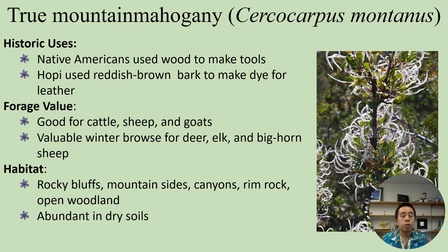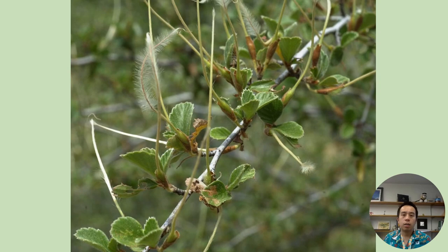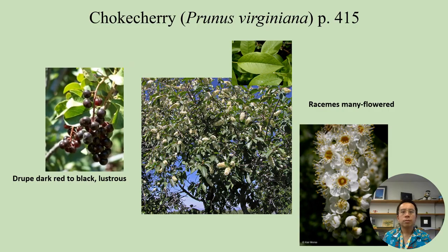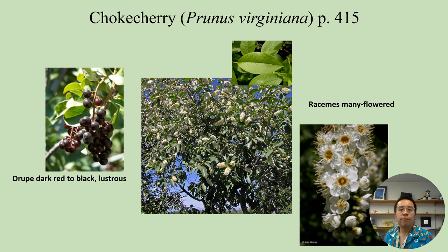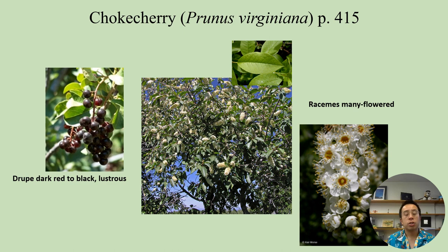Next we have chokecherry, Prunus virginiana, found on page 415. It often has dark red to black lustrous — meaning somewhat shiny — drupe fruits. A drupe fruit has a center pit, like a peach or in this case similar to a cherry, as the name chokecherry suggests. Its flowers are arranged in racemes — a cluster of flowers with many equidistant stems coming off a larger central stem — as you can see here.